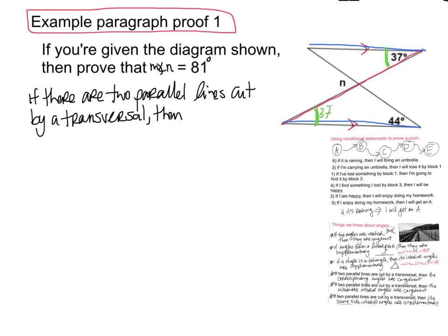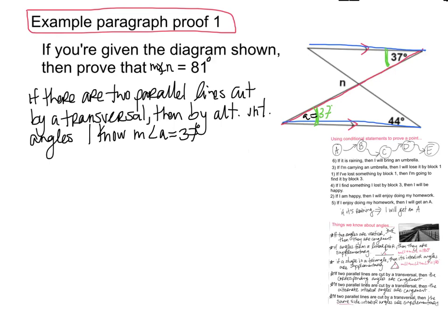That means, by alternate interior angles — notice I'm using an abbreviation here — the measure of angle A is 37 degrees. I'm going to call this angle A; I just made up an angle and named it. You can do that too.